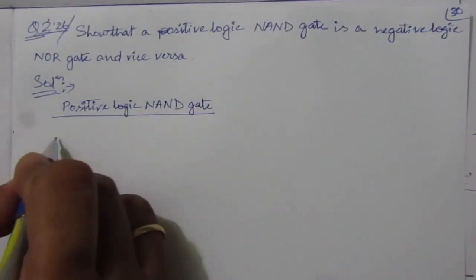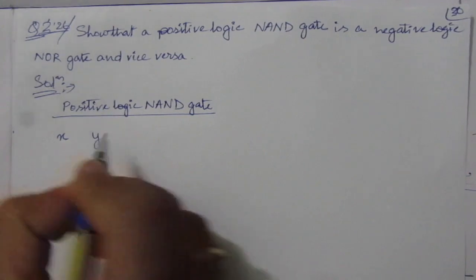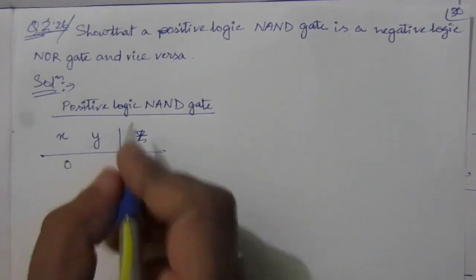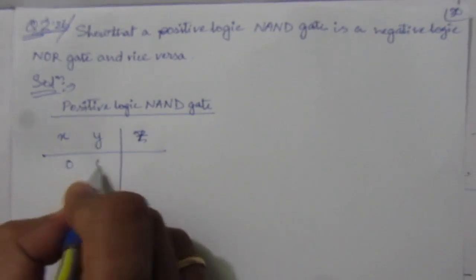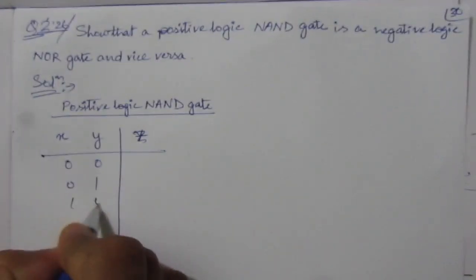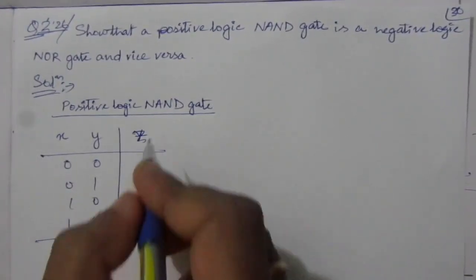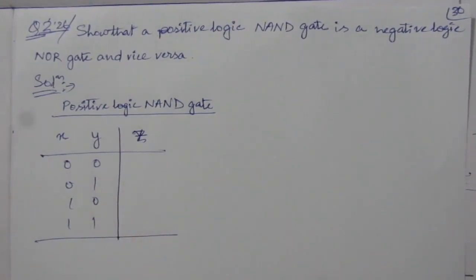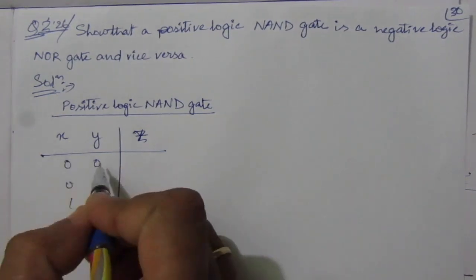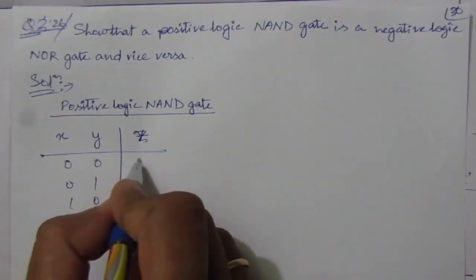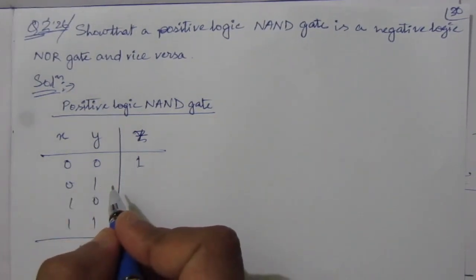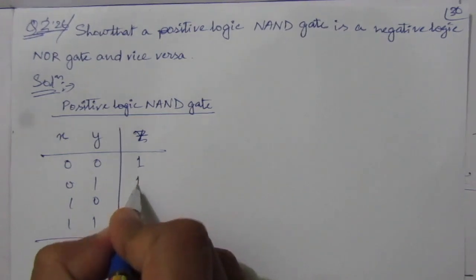Let us assume the inputs are x and y and the output is z. For positive logic, we have four combinations: 0,0 — 0,1 — 1,0 — and 1,1. A NAND gate is an AND gate followed by an inverter. So 0 AND 0, multiplication is 0; after inversion it will be 1. 0 AND 1, multiplication is 0; after inversion it will be 1.